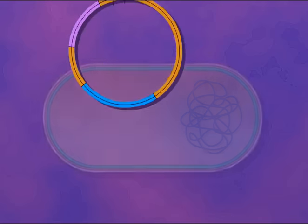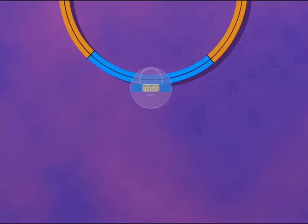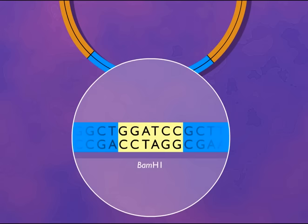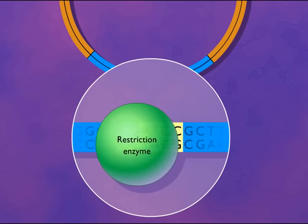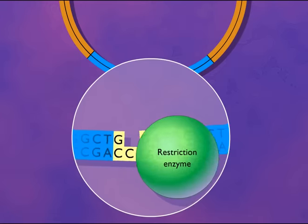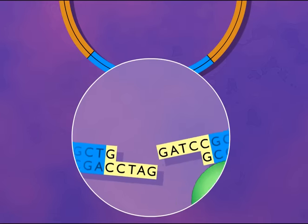Vectors must also have a small sequence of base pairs that can be recognized by a restriction enzyme. When this enzyme opens the circular plasmid, foreign DNA can be incorporated.